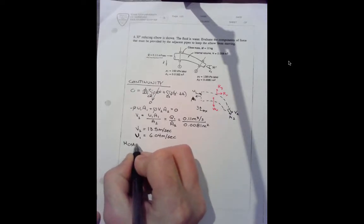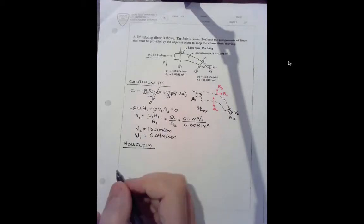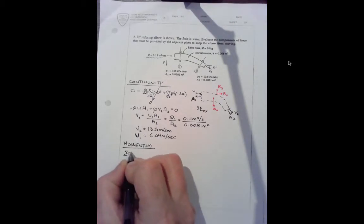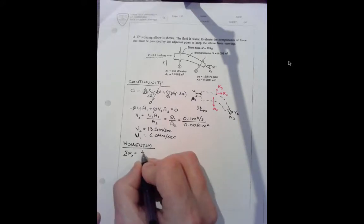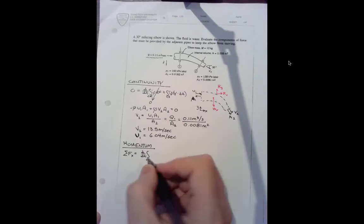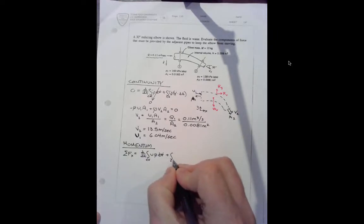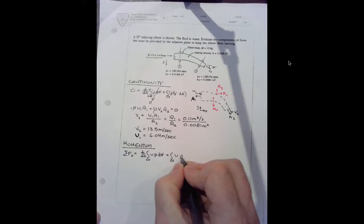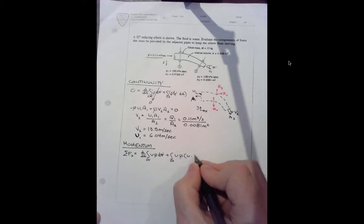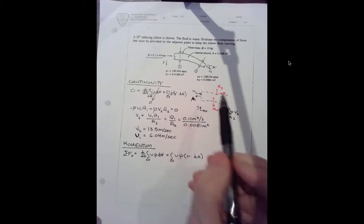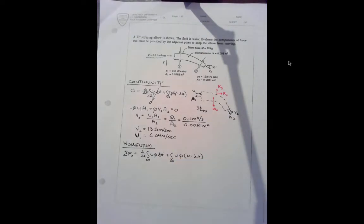Momentum. Momentum says the sum of the forces in the x direction equals d by dt integral control volume of u rho d volume plus integral of the control surface of u rho u dot dA. In this case the u and the x axis are coinciding, so the dot product is pretty simple to figure out.